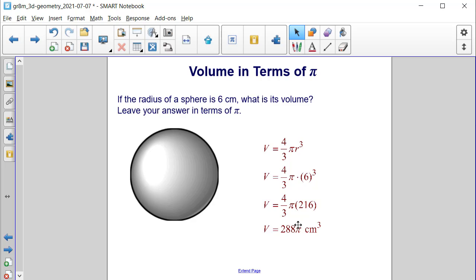And here is, again, the solution to our volume for this sphere that we had, and its volume is 288 pi cubic centimeters.